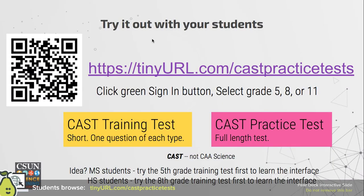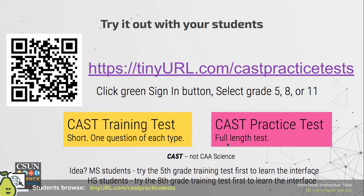Let's have you try this out. You can click on the link or scan the QR code to go to a place where you can try out a sample test. There are two options: the CAST training test, which is short with just one question of each type so you can get a flavor and check the interface; and the CAST practice test, shown in the more salmon color, which is a full-length test for your grade level.